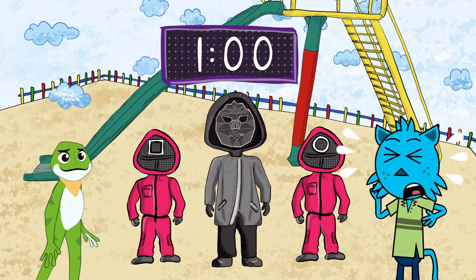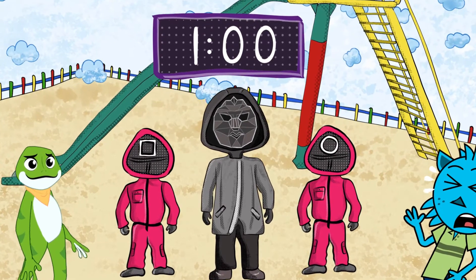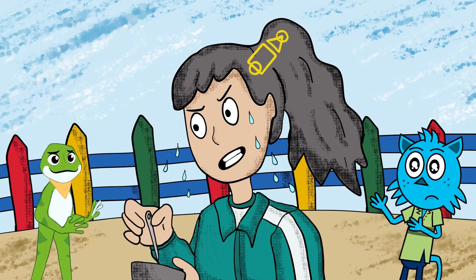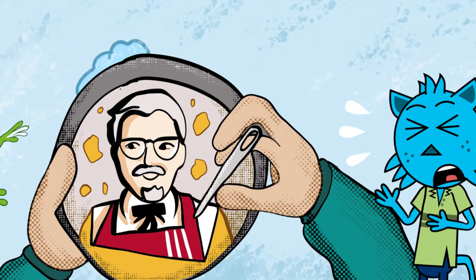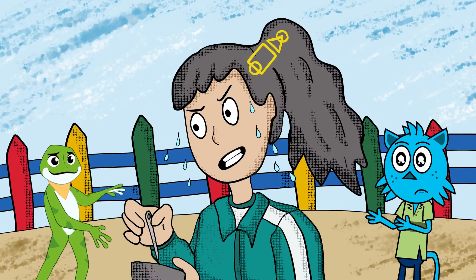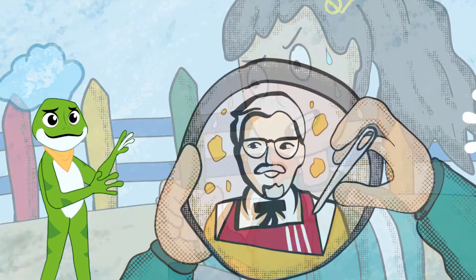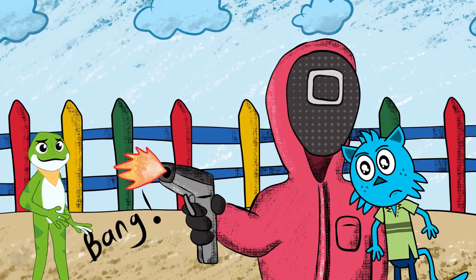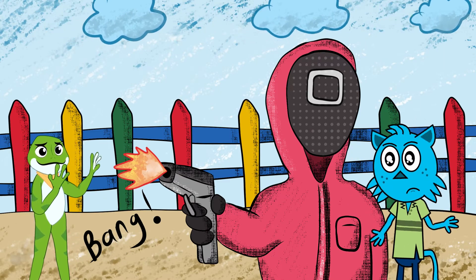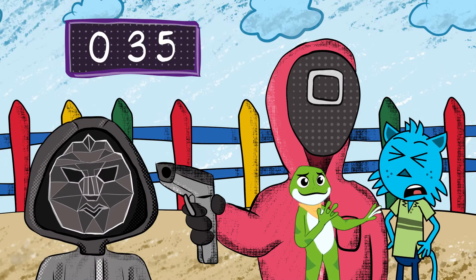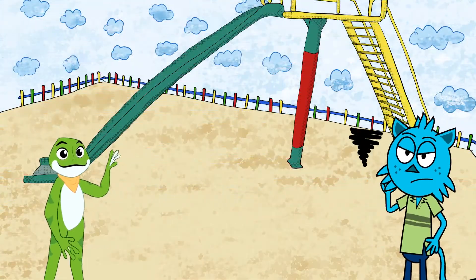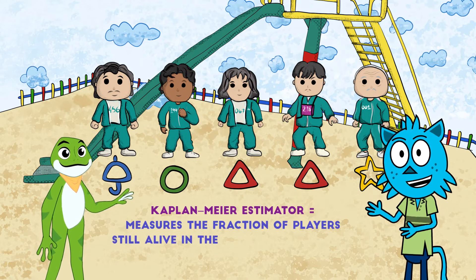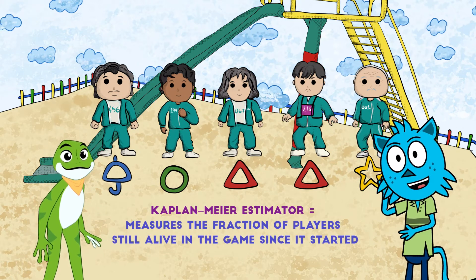One hour remaining. Those who are unable to remove their shapes from their honeycombs will be eliminated. Let's hurry up, Teddy. We can use the Kaplan-Meier estimate to measure the fraction of players who survived for a certain amount of time.